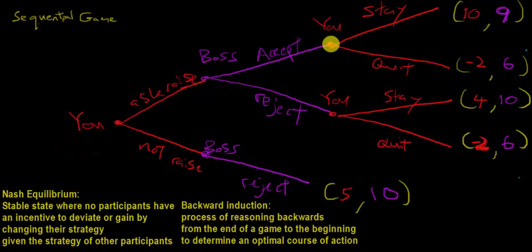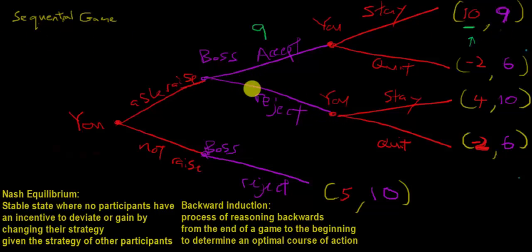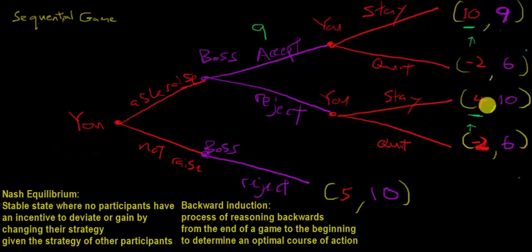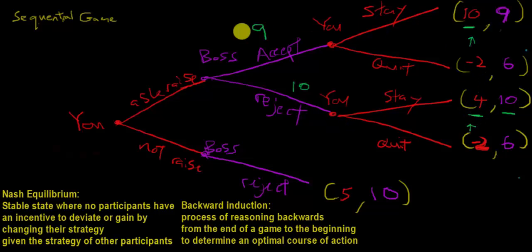To know what your boss will do, you must put yourself in his shoes — and he is doing the same, putting himself in your shoes to maximize his utility. If he accepts, he knows you will stay, because 10 is higher than negative 2, so he gets a payoff of 9. If he rejects, he knows you will still stay rather than quit, because 4 is also higher than negative 2. That's why simply telling your boss you'll quit won't work — he knows how painful quitting is for you, and in that state he gets 10.